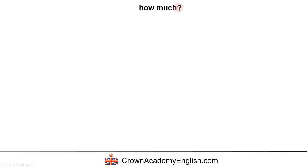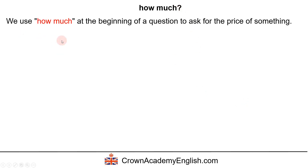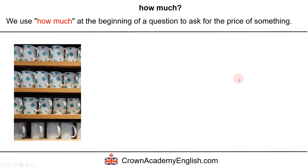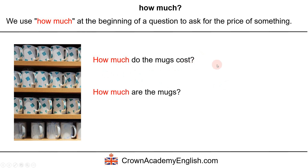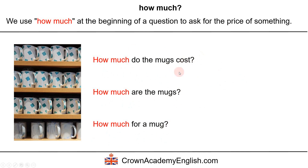How much. We use how much at the beginning of a question to ask for the price of something, and there are three common ways. Method one: how much do the mugs cost? — using how much with the verb cost. Or we can use the verb be: how much are the mugs? And finally, we can simply say: how much for a mug? All three questions are simply asking: what is the price of a mug?